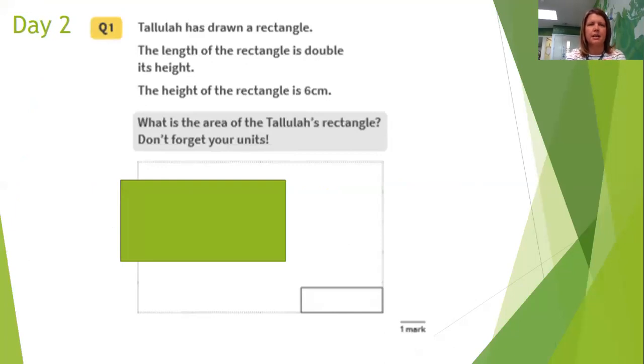On here it says the height is six centimetres. If we're talking about a rectangle, technically we should be saying length and width. So the width is six centimetres and the length is double the height or the width in this case. So the length is double that, 12 centimetres.